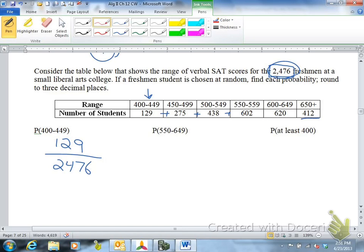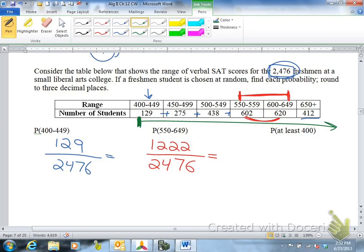On the next question, if you randomly pick a student, 550 to 649. Be careful with this because 550 is here, 649 is over here. So you need how many successes. You would add both of these, and you would have 1222 out of the total 2476. And the probability that you pick a student who made at least a 400. At least means 400 or more. So at least this would be everyone made at least a 400. So you would have 2476 out of 2476, which gives 100% made at least a 400. Make sure you understand at least means that number or more.